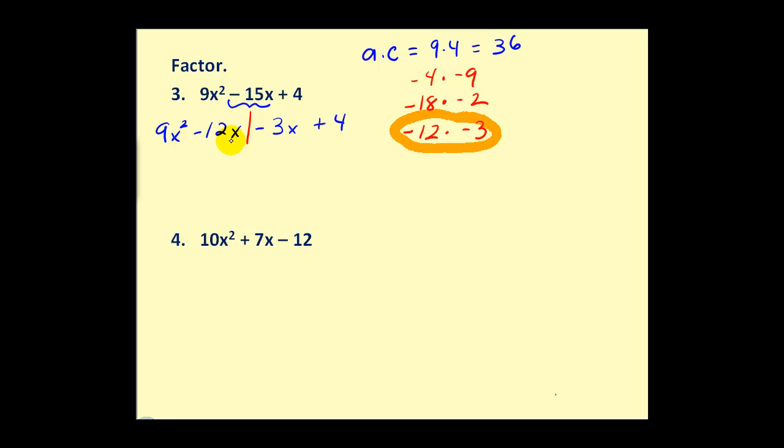Factor out the GCF of the first two terms. That would be 3x. We're left with 3x - 4. Now the second two terms only have a common factor of 1 or -1. Remember we're looking for another binomial factor of 3x - 4. If we factor out -1 we'd have a positive 3x and then minus 4, which is good news.